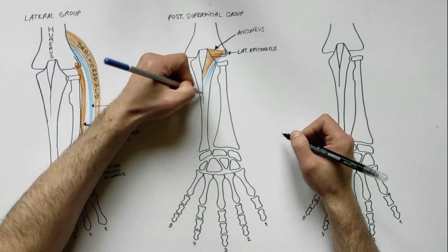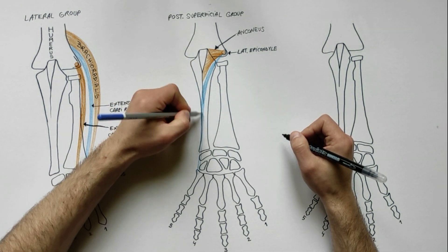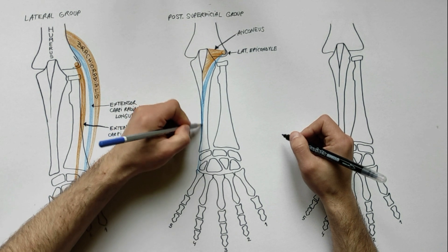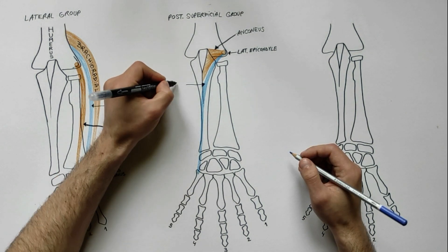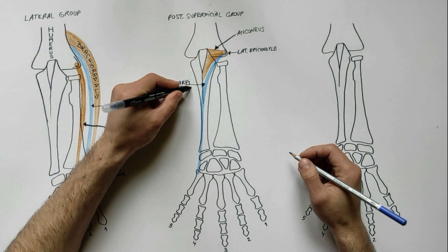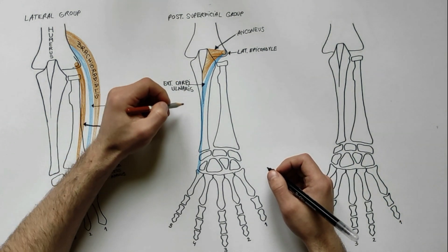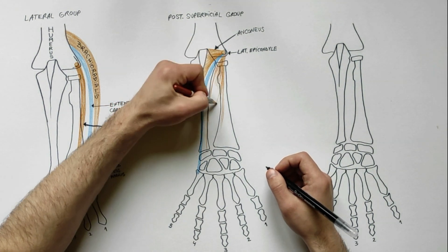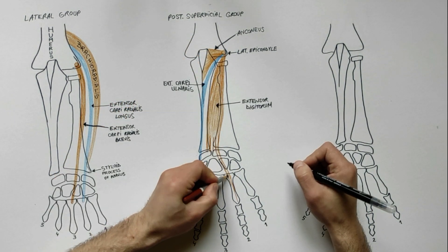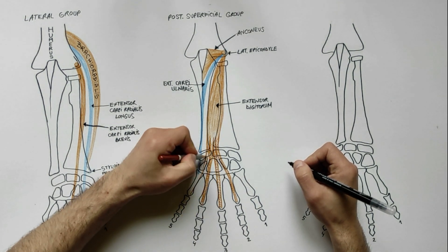Having origin from the lateral epicondyle of the humerus and inserting into the medial side of the base of the fifth metacarpal bone is the extensor carpi ulnaris. The biggest muscle of the posterior superficial group is the extensor digitorum, which arises from the lateral epicondyle of the humerus and gives rise to four tendons for the medial four digits.